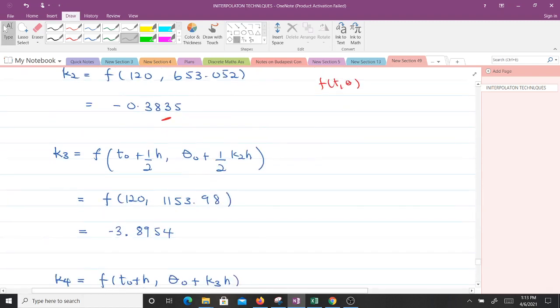We find K3, and that's the formula for K3. Making substitutions, we are going to have F of 120. When you make substitution and evaluate, we get F of 120, then 653.398. When you put that into F of T theta, we will get negative 3.8954.